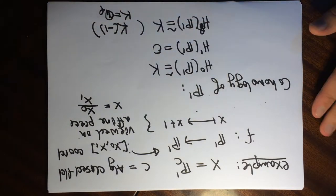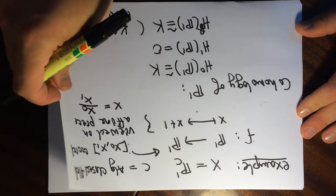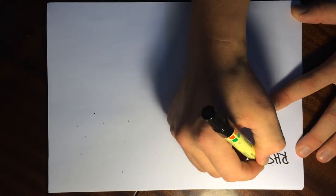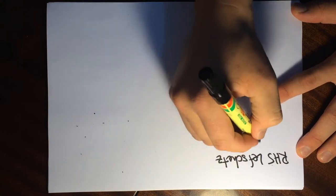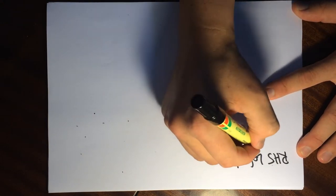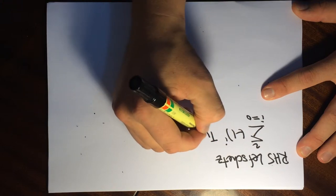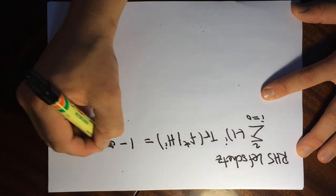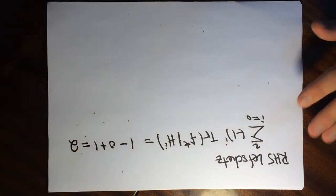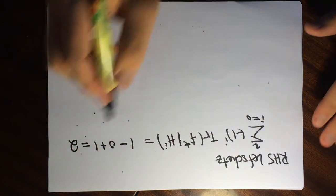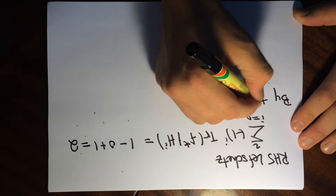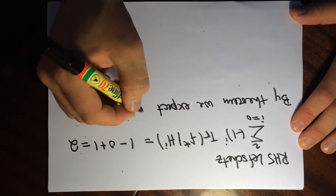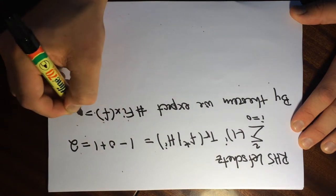We have computed the cohomology, and now we can compute the right-hand side of the Lefschetz formula. The right-hand side is the alternating sum for i from 0 to 2 of (-1)^i times the trace of F acting on H^i. This gives 1 minus 0 plus 1, which equals 2. So by the theorem, if it is true, we expect the number of fixed points of F to be equal to 2.